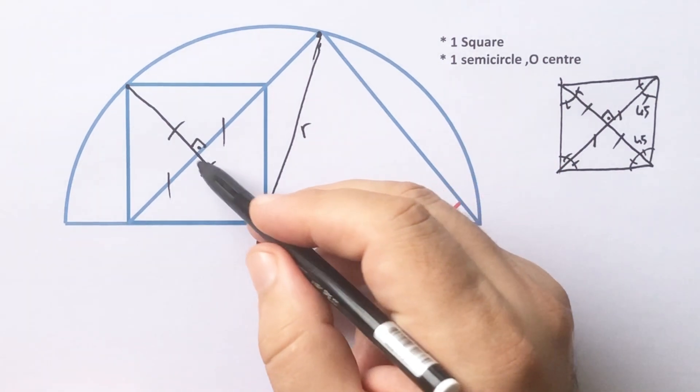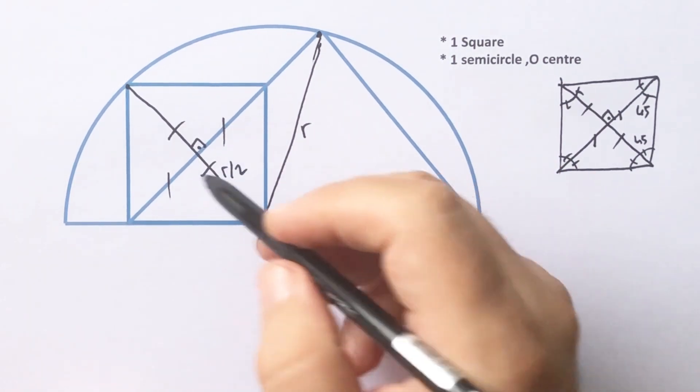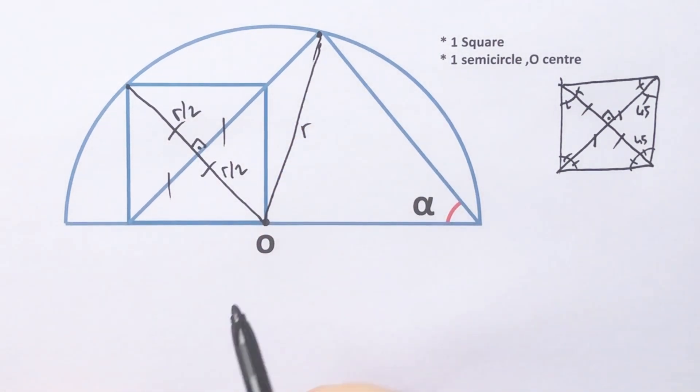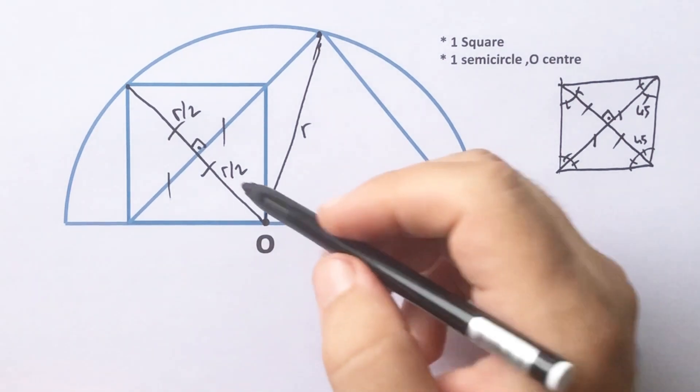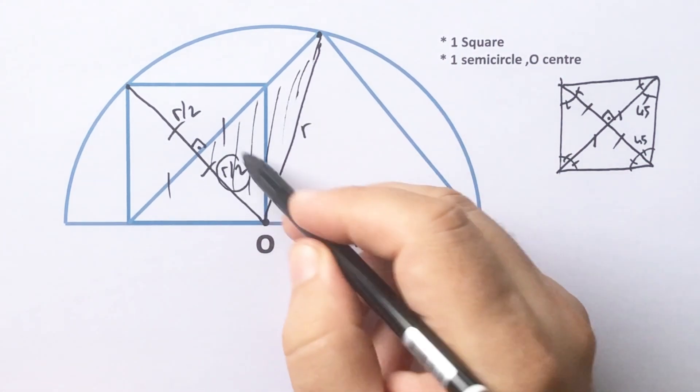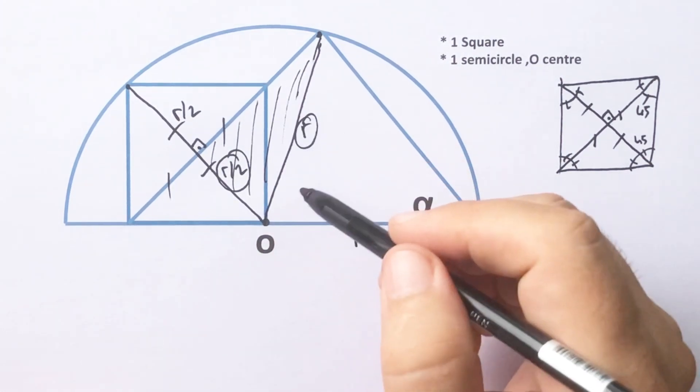These two lengths are radius, right? So here must be half of the r and here is also half of the r. And here is radius also. And then notice that for this triangle, here is half of the r and this length is r.